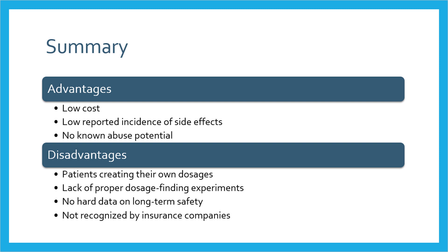Some advantages of LDN are that it is inexpensive, unlikely to cause side effects, and has no known abuse potential. Some disadvantages are that since the 4.5 mg dose is not available commercially, patients may try to create their own dosing by splitting 50 mg tablets, which could lead to variable day-to-day dosing. It is likely that 4.5 mg is not the optimal dosage for all individuals, but since it was the maximum dose studied in clinical trials, prescribers may be reluctant to increase the dose. Other dosing schedules such as twice a day are being used but have not been explored in clinical studies.